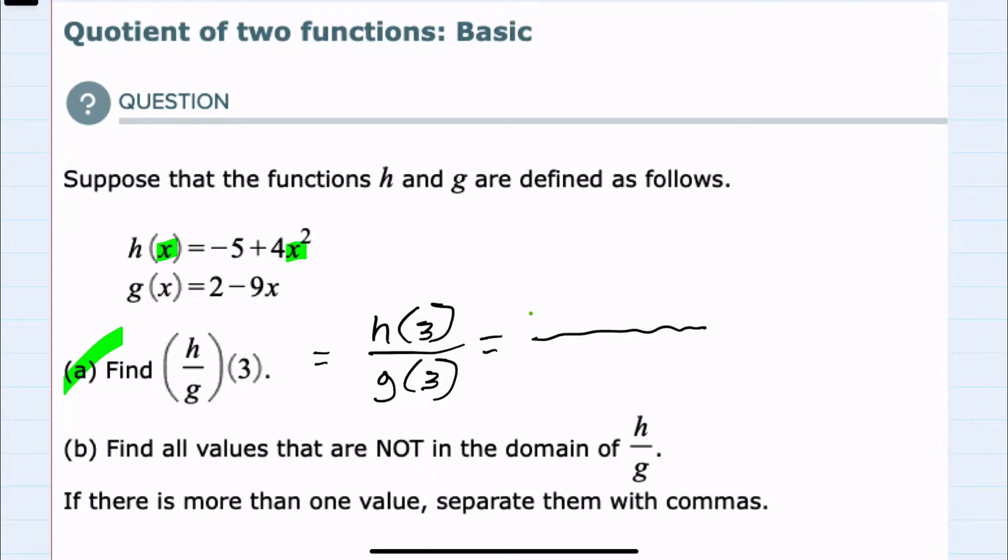That would be -5 + 4(3²). And then in the denominator, the g function replacing x with 3, this would be 2 - 9(3).